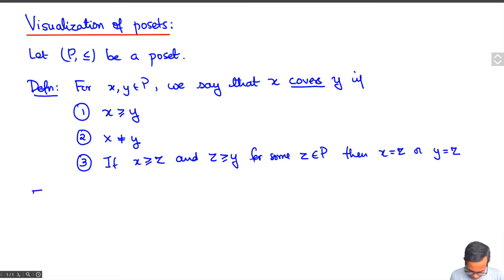For example, in the natural numbers or in non-negative integers or in integers themselves, x covers y if x is equal to y plus 1. But in the partially ordered set of real numbers or rational numbers, there are no covers.